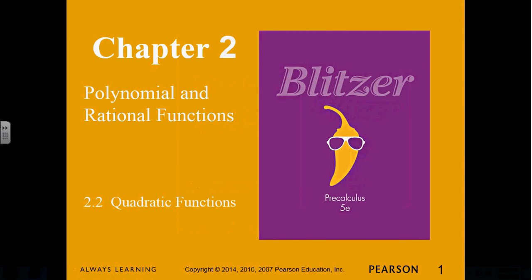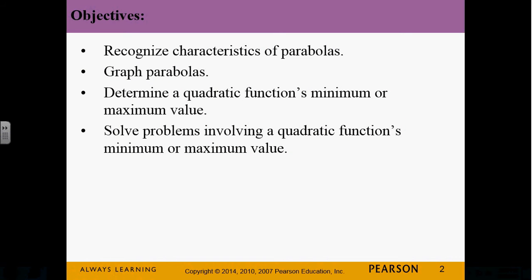Section 2.2 is quadratic functions. What is a quadratic function? Something with a square in it. So this is basically what we're going to be focusing on in this section: quadratic functions that have squares in them. We want to be able to recognize characteristics of parabolas, graph parabolas, determine a quadratic function's maximum and minimum, and solve problems involving quadratic functions, maximums, and minimums.